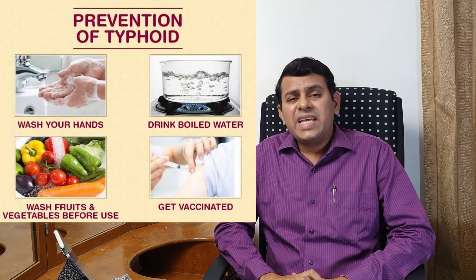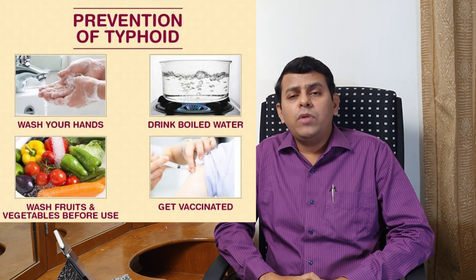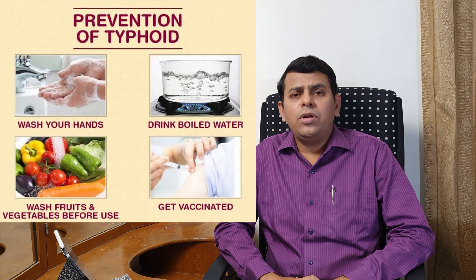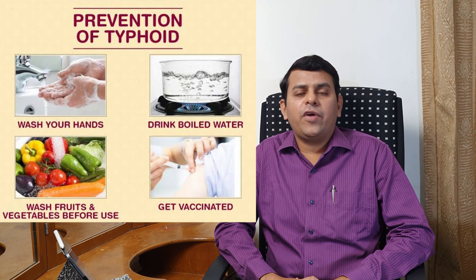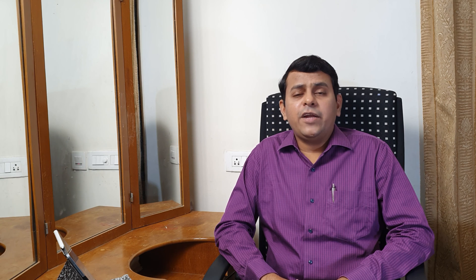For prevention, the route of entry is feco-oral, through contaminated food and water. Safe drinking water supply, improved sanitary measures, and improvement in personal hygiene are the cornerstones of typhoid fever prevention.